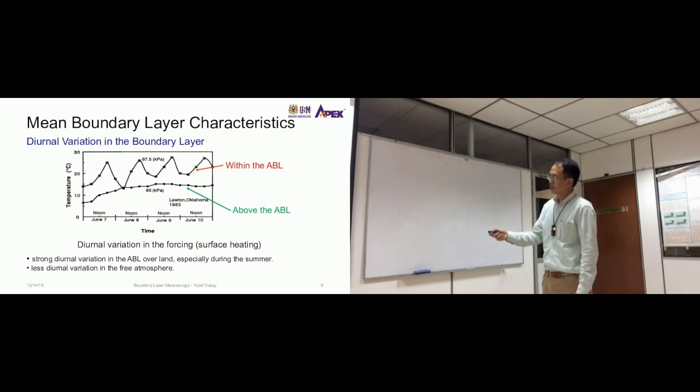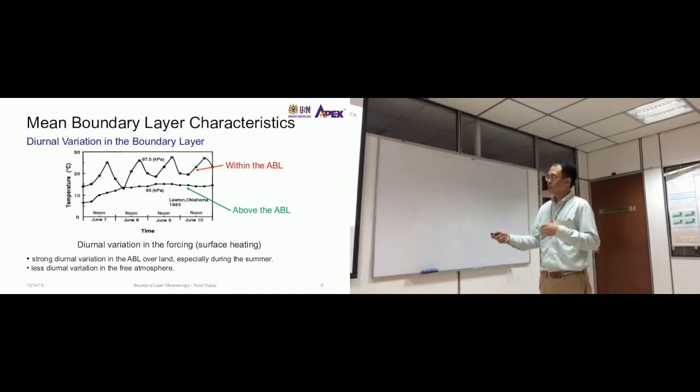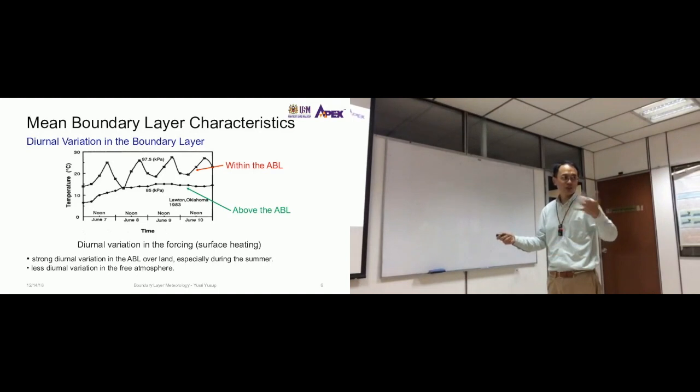Of course, the data is from Layton, Oklahoma. It's not the actual value that we're concerned with. We're just looking at the changes that happen. The only difference between that area and Malaysia is just the temperature, the actual magnitude, but not the actual variation.